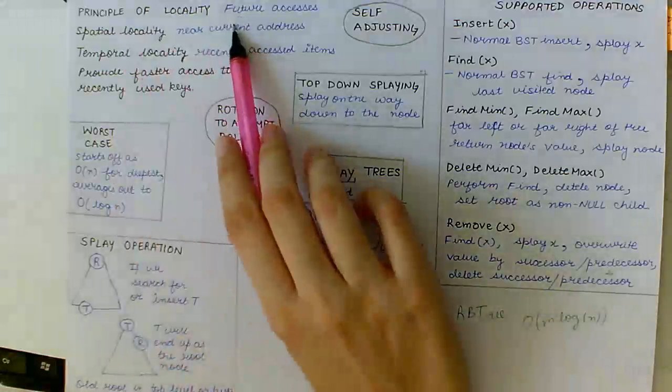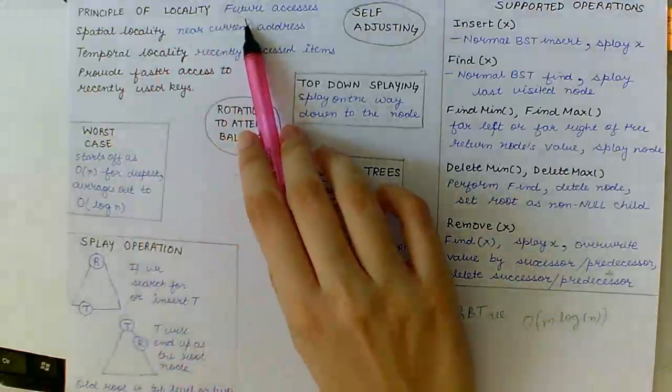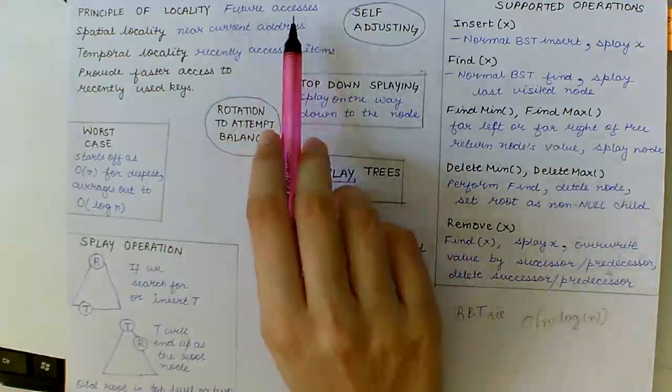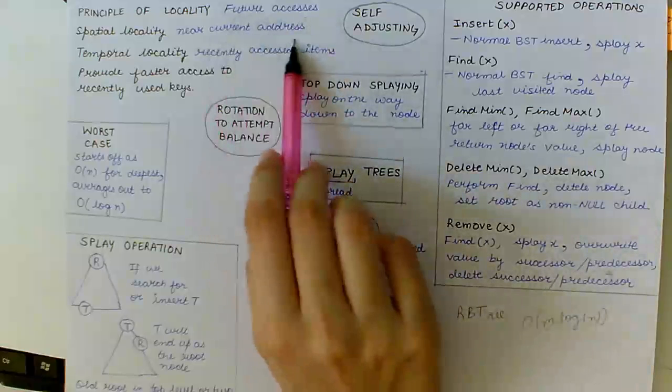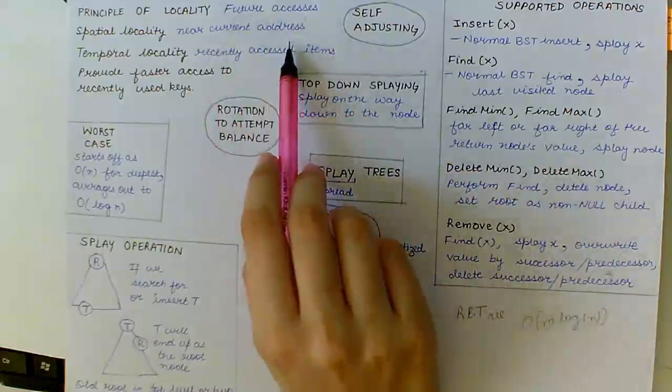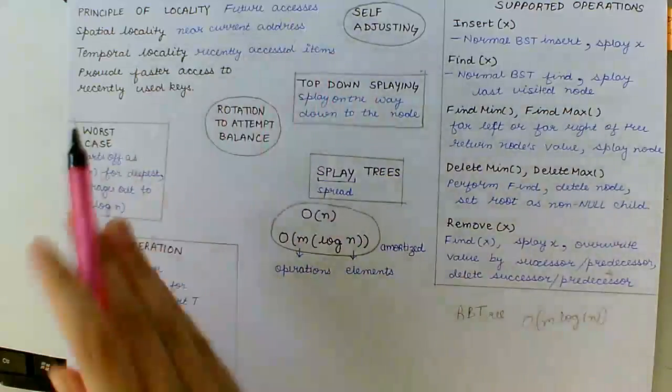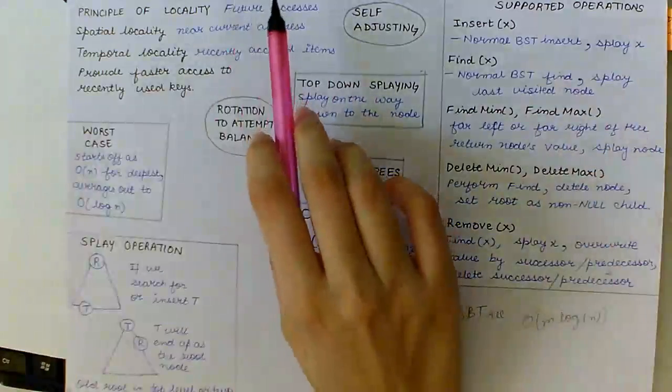Now, this is based on the principle of locality where there are two dimensions of this principle, that is space and time. Spatial locality says that future accesses will likely cluster near current addresses and like instructions and data arrays are sequential.